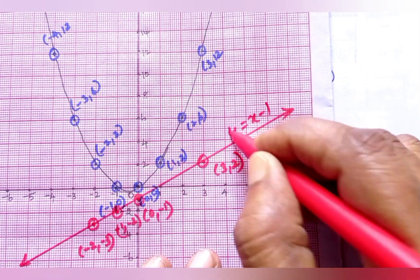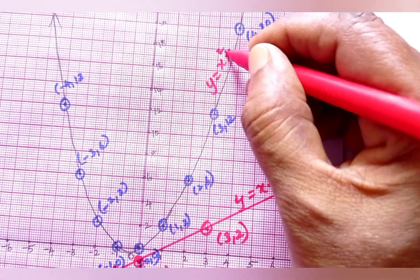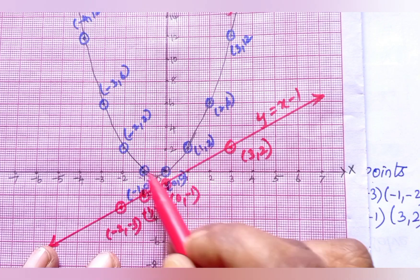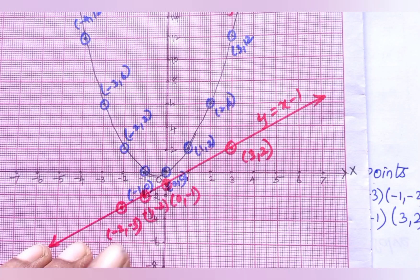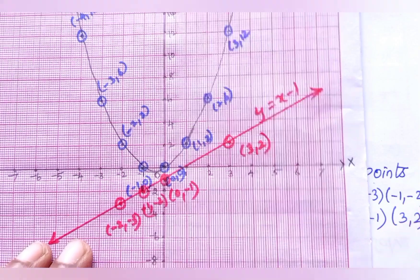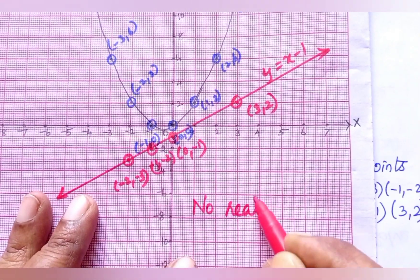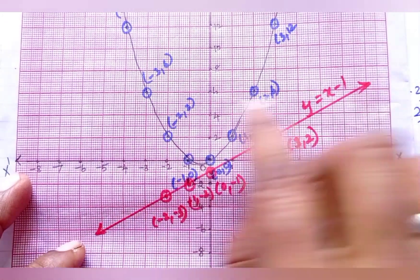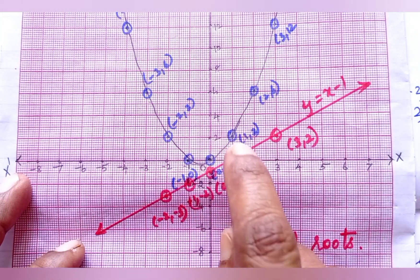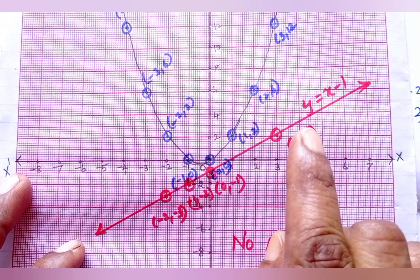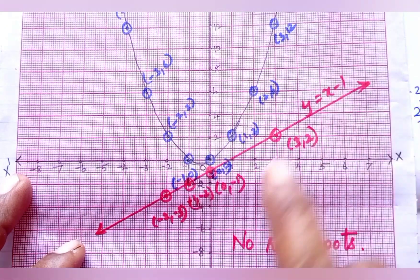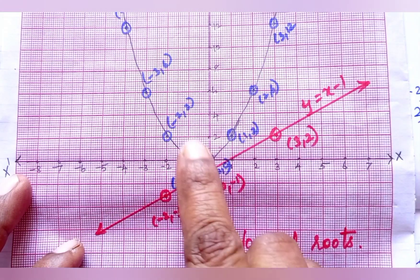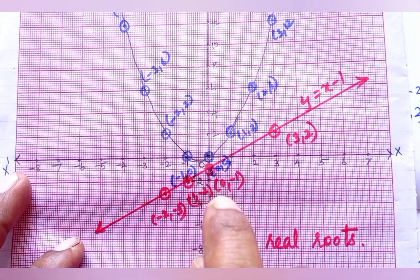The intersection of the parabola and the straight line gives the solution. But here there is no intersection between the parabola and the straight line. So the solution for this question is: no real roots. If the line touches the parabola at one point, there is one solution; if it cuts at two points, there are two solutions. Here, no intersection means no real roots.